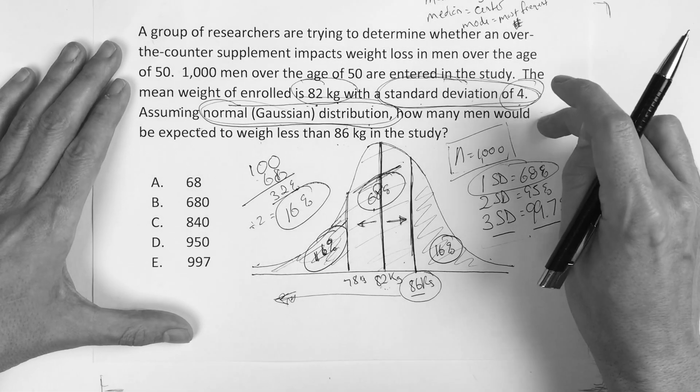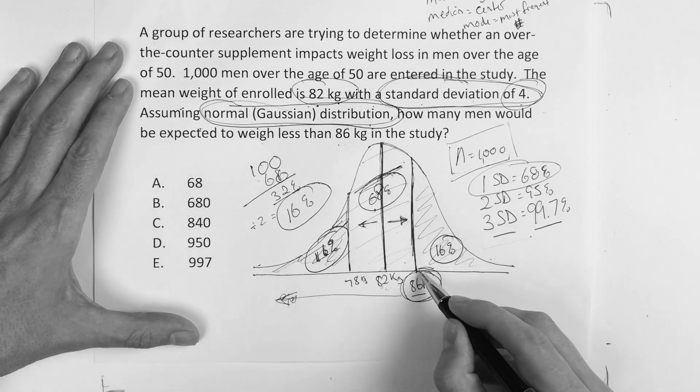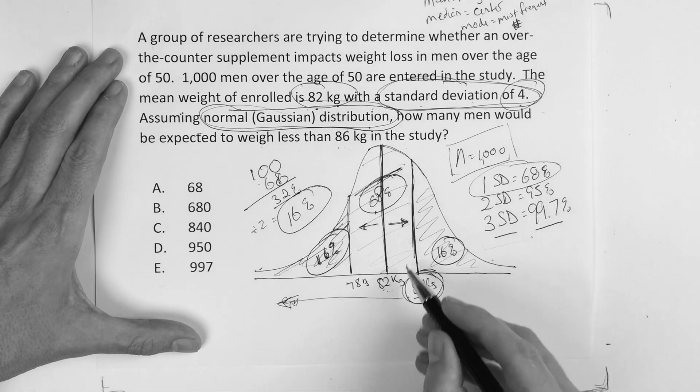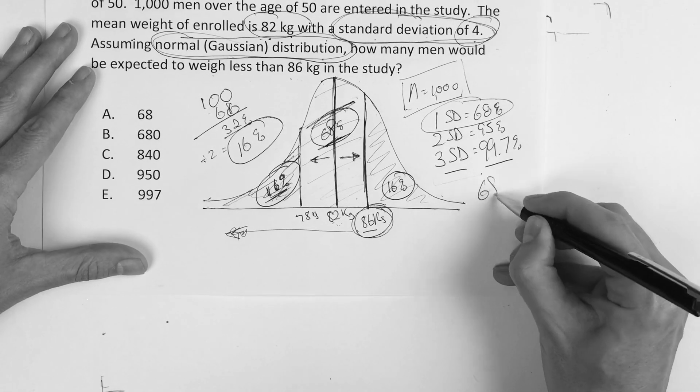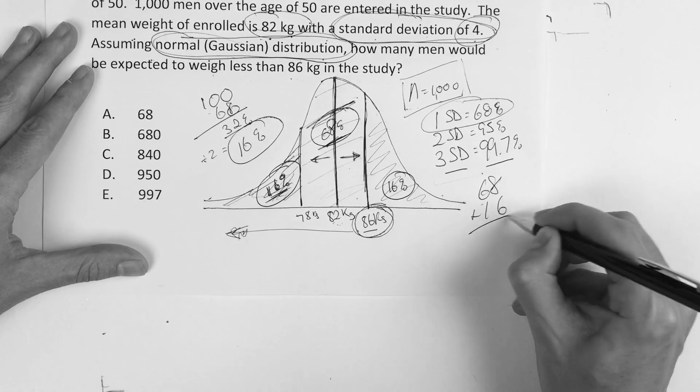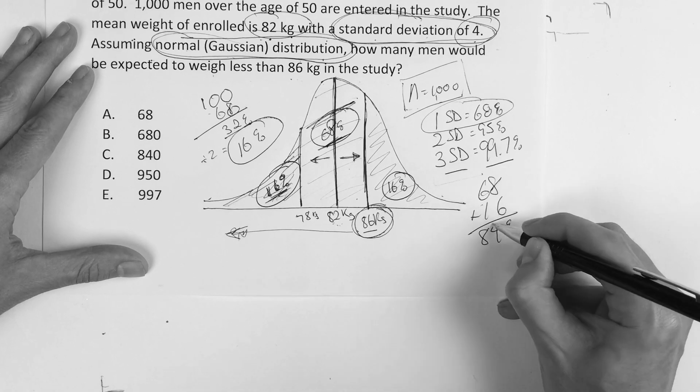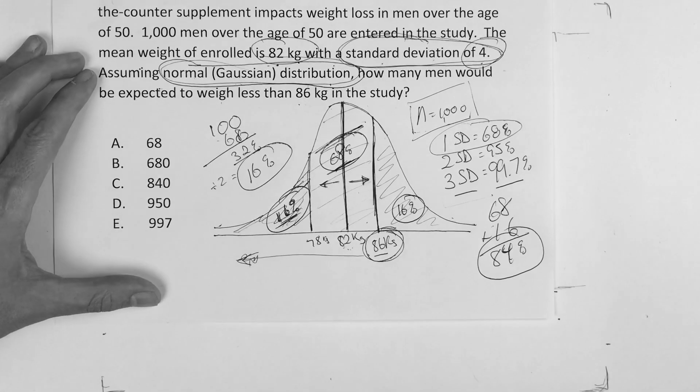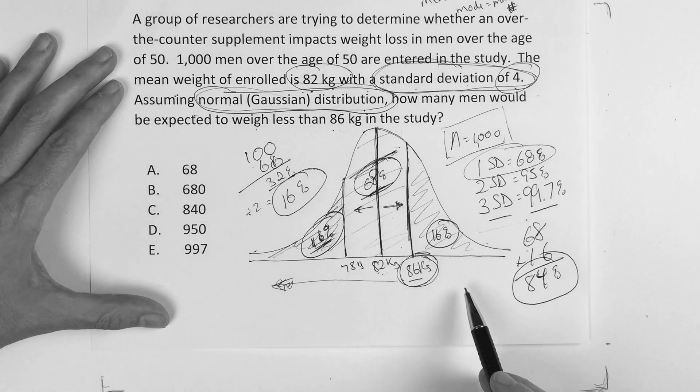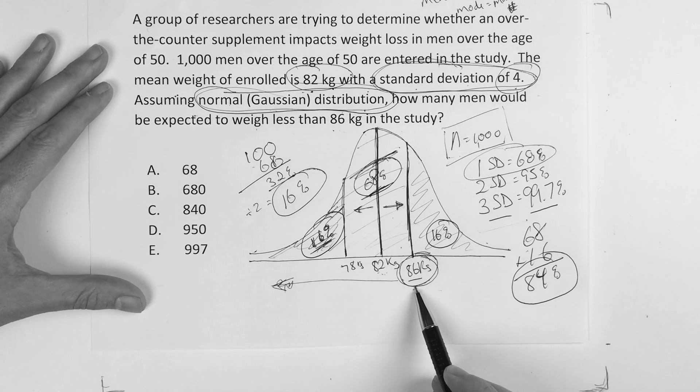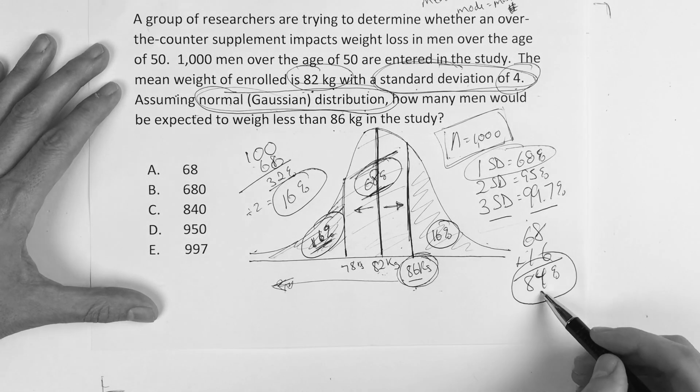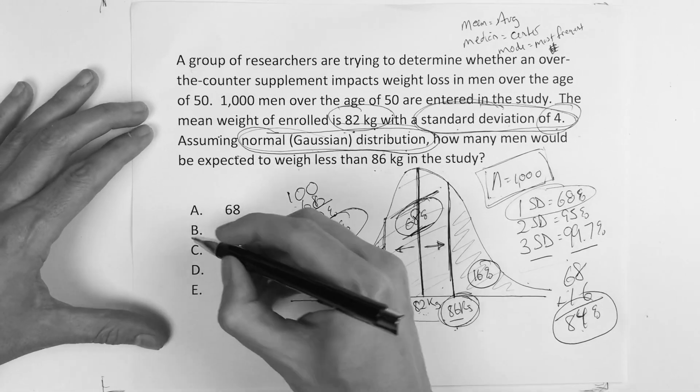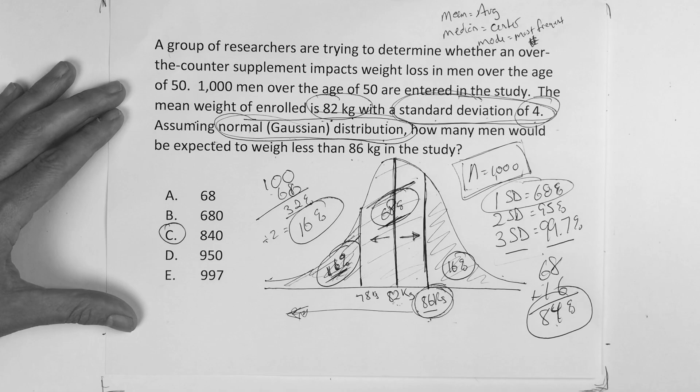The question said, how much is below 86? I've got my 68 plus my 16. So 68 plus 16 gives me 84% of the population below 86 kilograms. How many people were in this study? 1,000. So what's 84% of 1,000? 840.